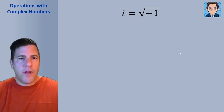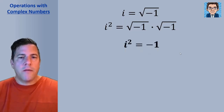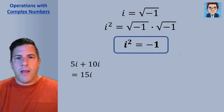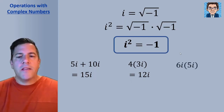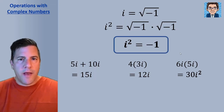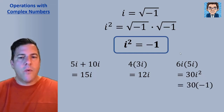An important concept when doing operations with complex numbers is i squared. If i is the square root of negative 1, then i squared is the square root of negative 1 times the square root of negative 1, which ends up being negative 1. So i squared equals negative 1. We treat i just like any other variable: 5i plus 10i gives 15i, and 4 times 3i gives 12i. But 6i times 5i gives 30i squared, and since i squared equals negative 1, we replace it to get 30 times negative 1, or just negative 30.